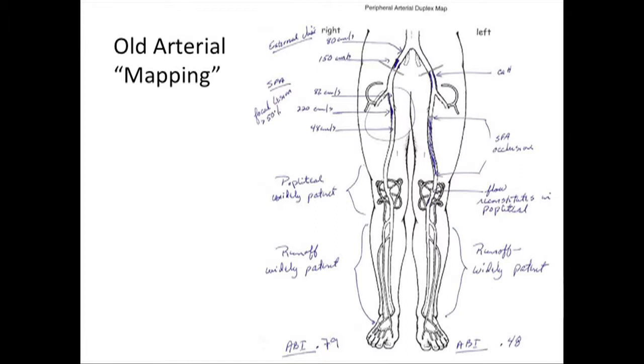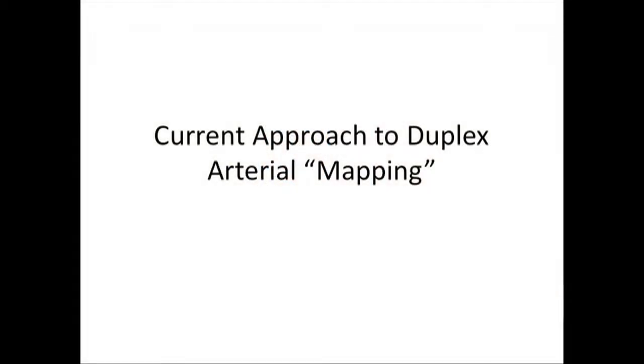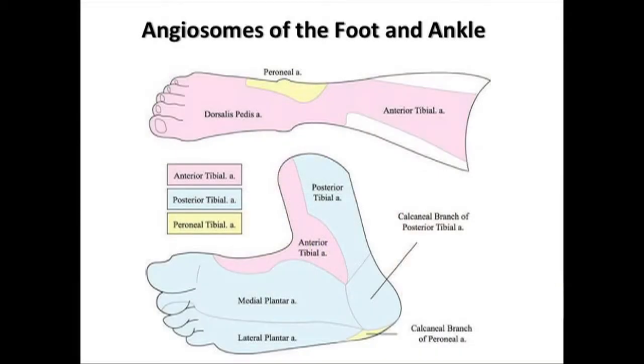Previously we used arterial mapping to see large vessels, look at stents, and identify large occlusions — for example, a superficial femoral artery occlusion that reconstitutes with widely patent runoff. But there was no detailed description of calcification, severity of stenosis, or segmental occlusion length. Now we're doing detailed mapping trying to recreate an angiogram with ultrasound, and we're also trying to match the angiosome — telling the interventional cardiologist, PV specialist, vascular surgeon, or radiologist where the vessels are going and whether stenoses match up with the angiosome.